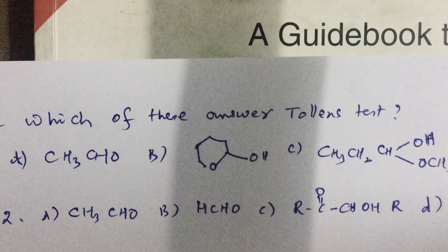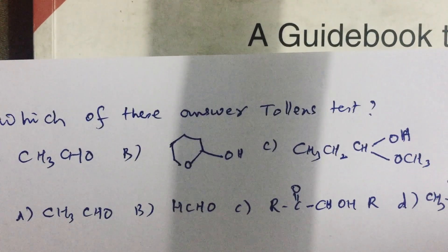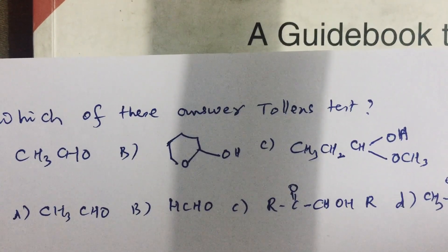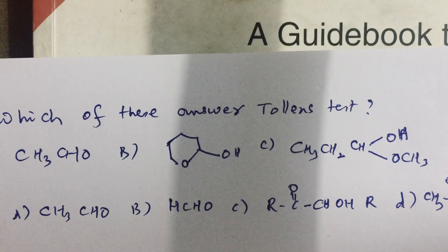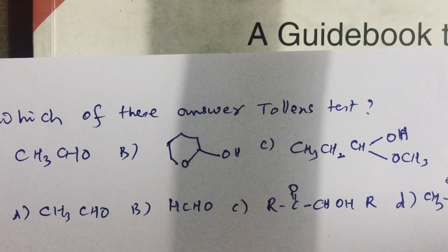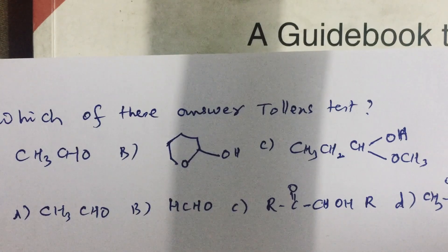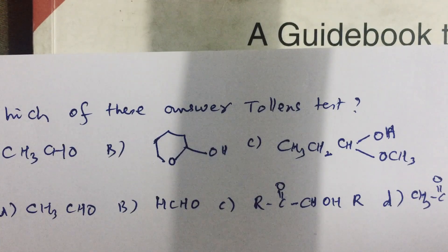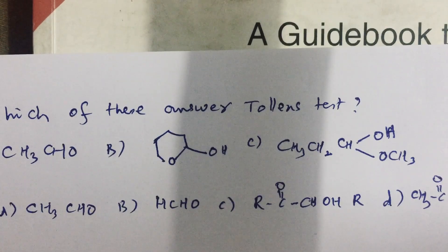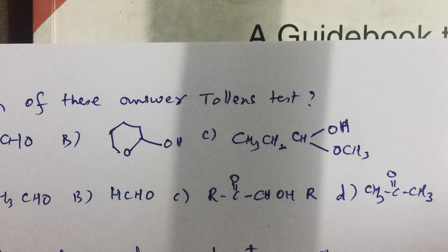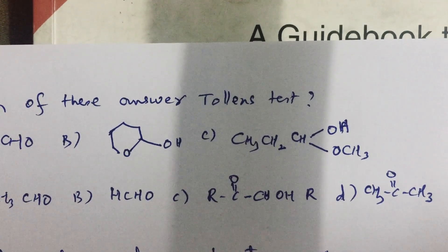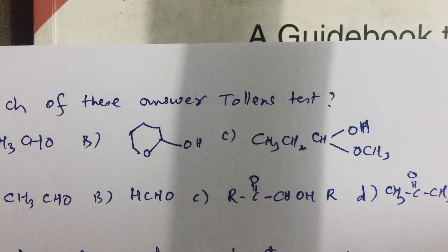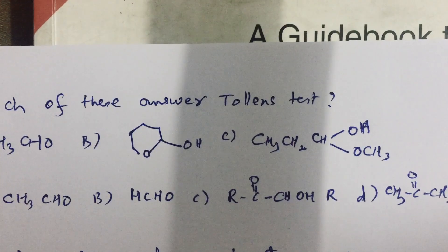We see one more. In the second set, acetaldehyde obviously answers the Tollens test. Formaldehyde answers the Tollens test. And the third compound that is also able to answer the Tollens test and the D cannot answer the Tollens test. Why C can answer the Tollens test? Can you think it over?